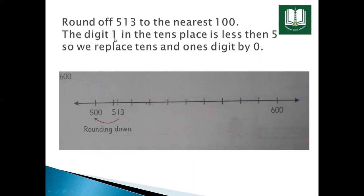In 513, the digit 3 is in the ones place and 1 is in the tens place. We want to look at the tens value. The digit 1 in the tens place is less than 5, so we replace the tens and ones digits with 0. This is rounding down.